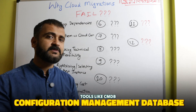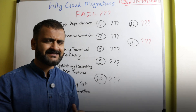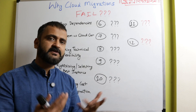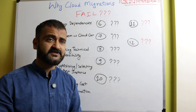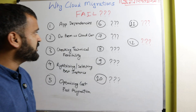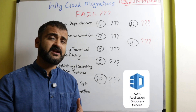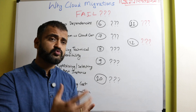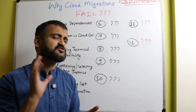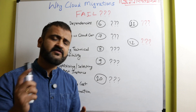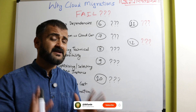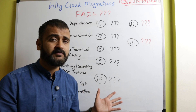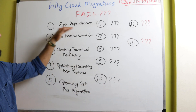Tools like CMDB — Configuration Management Database — most big companies have it, where they maintain this connectivity and dependency into an inventory database called CMDB. For cloud, you have application discovery tools for AWS, GCP, and Azure which can also discover dependencies, but mostly it has to be an in-house product. You cannot rely fully on cloud for understanding your application dependency, because you are the contextual masters of your own applications.